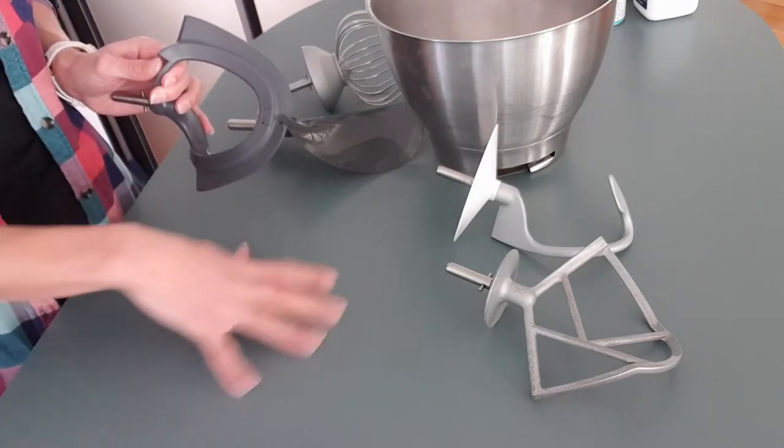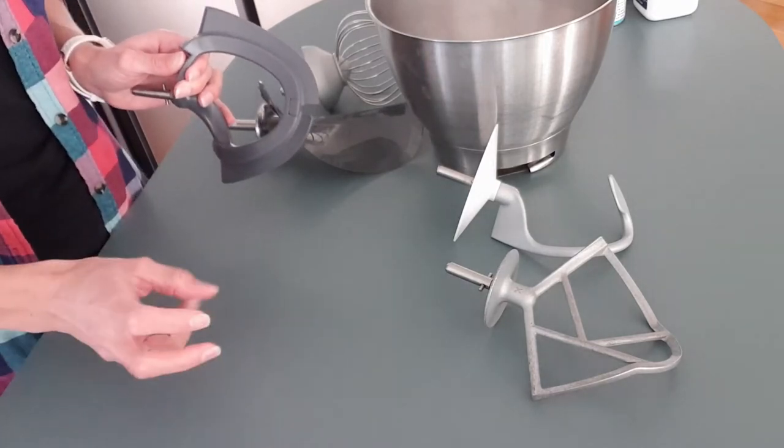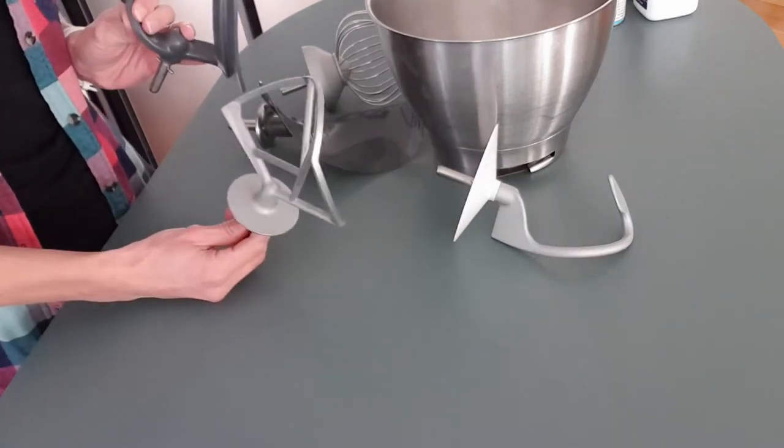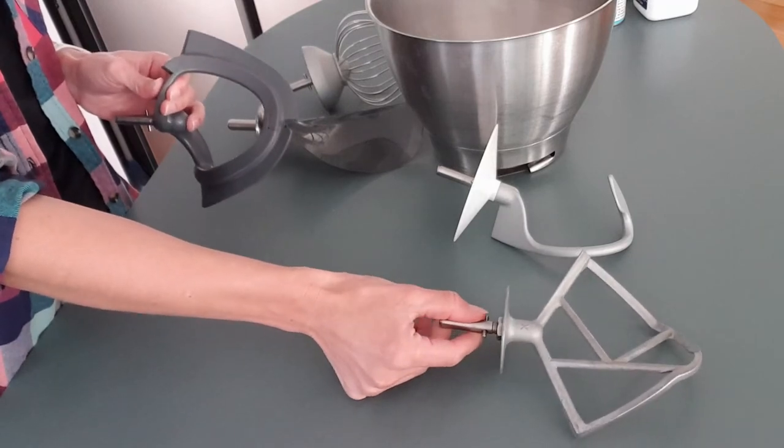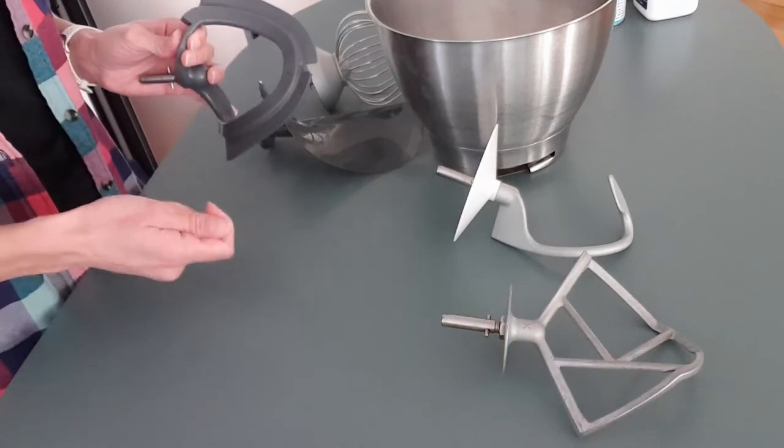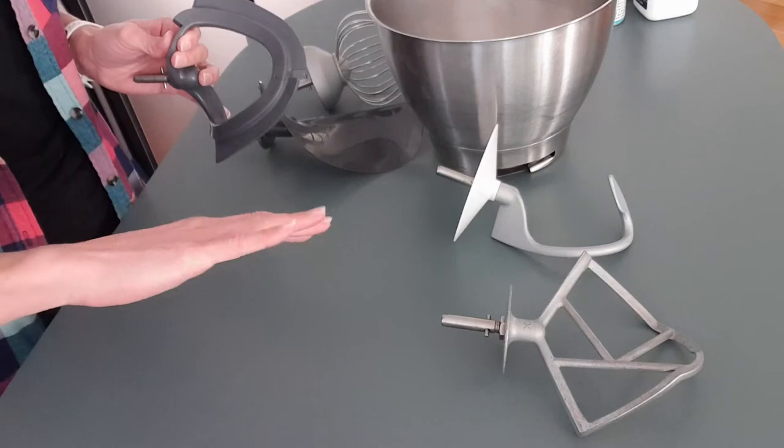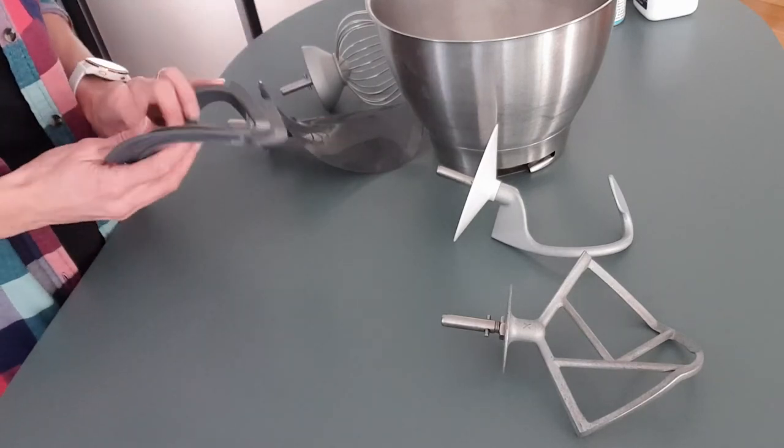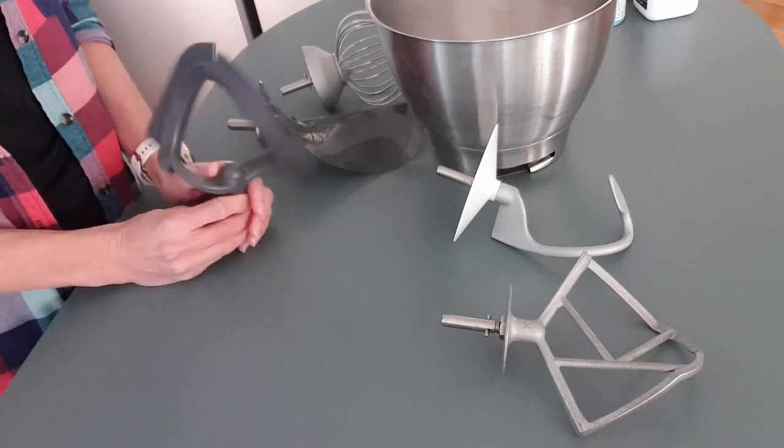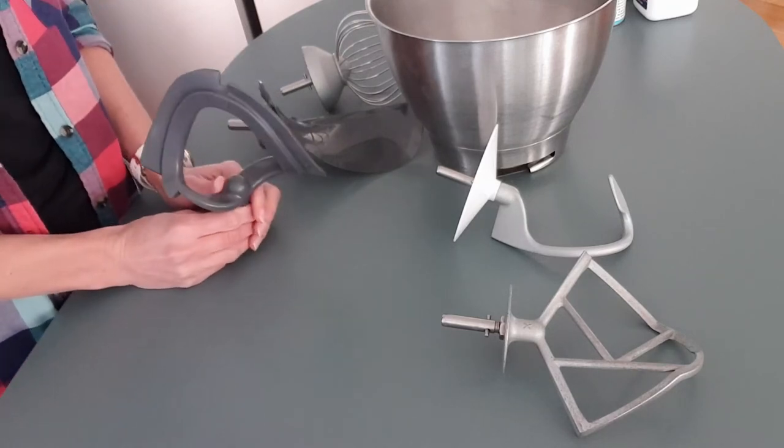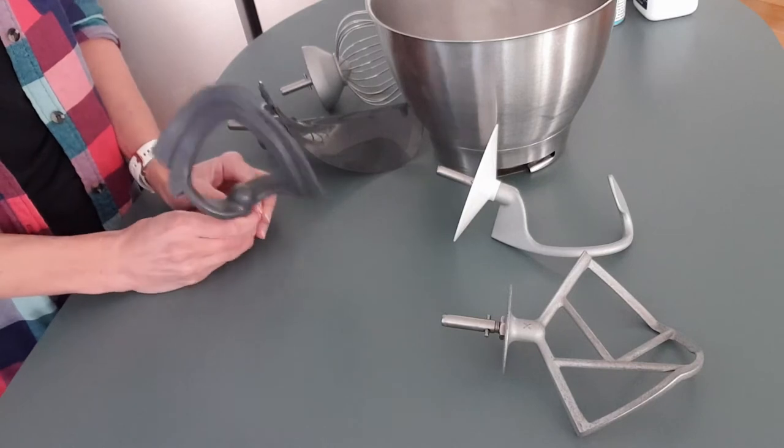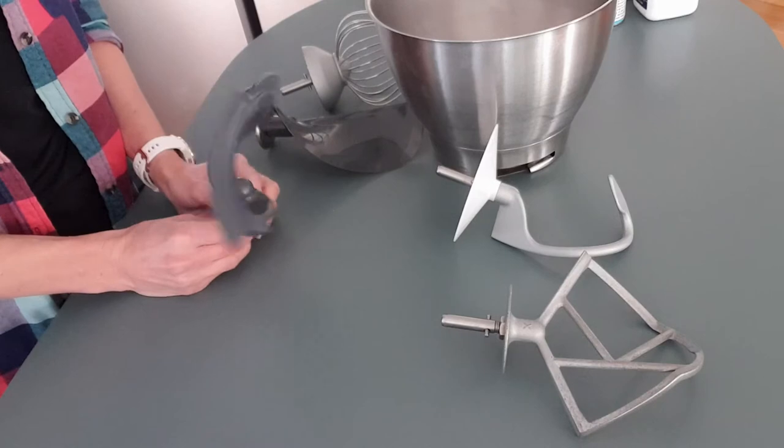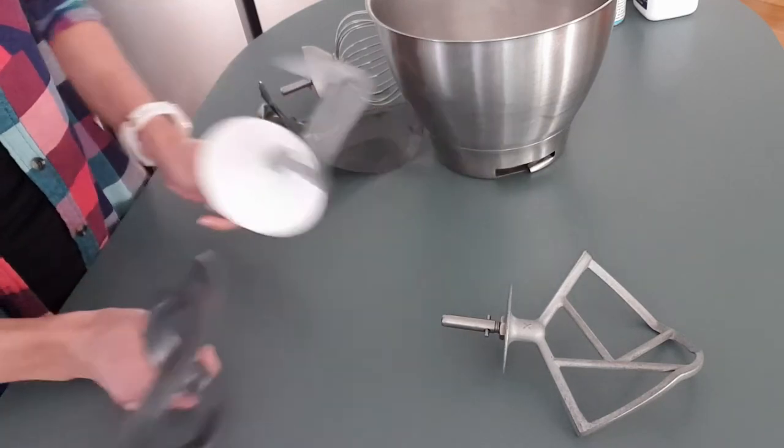So if a recipe starts with 'cream together butter and sugar,' this is the attachment you want to use. The K beater will work as well, but this is just better—it's easier and it has the same effect as using a spatula and creaming something against the side of a bowl. So this works great, and this is what I use to make my buttercream icings, and it is so smooth. It's just amazing. So this is—I don't want to say my favorite attachment, but I really do like this one.